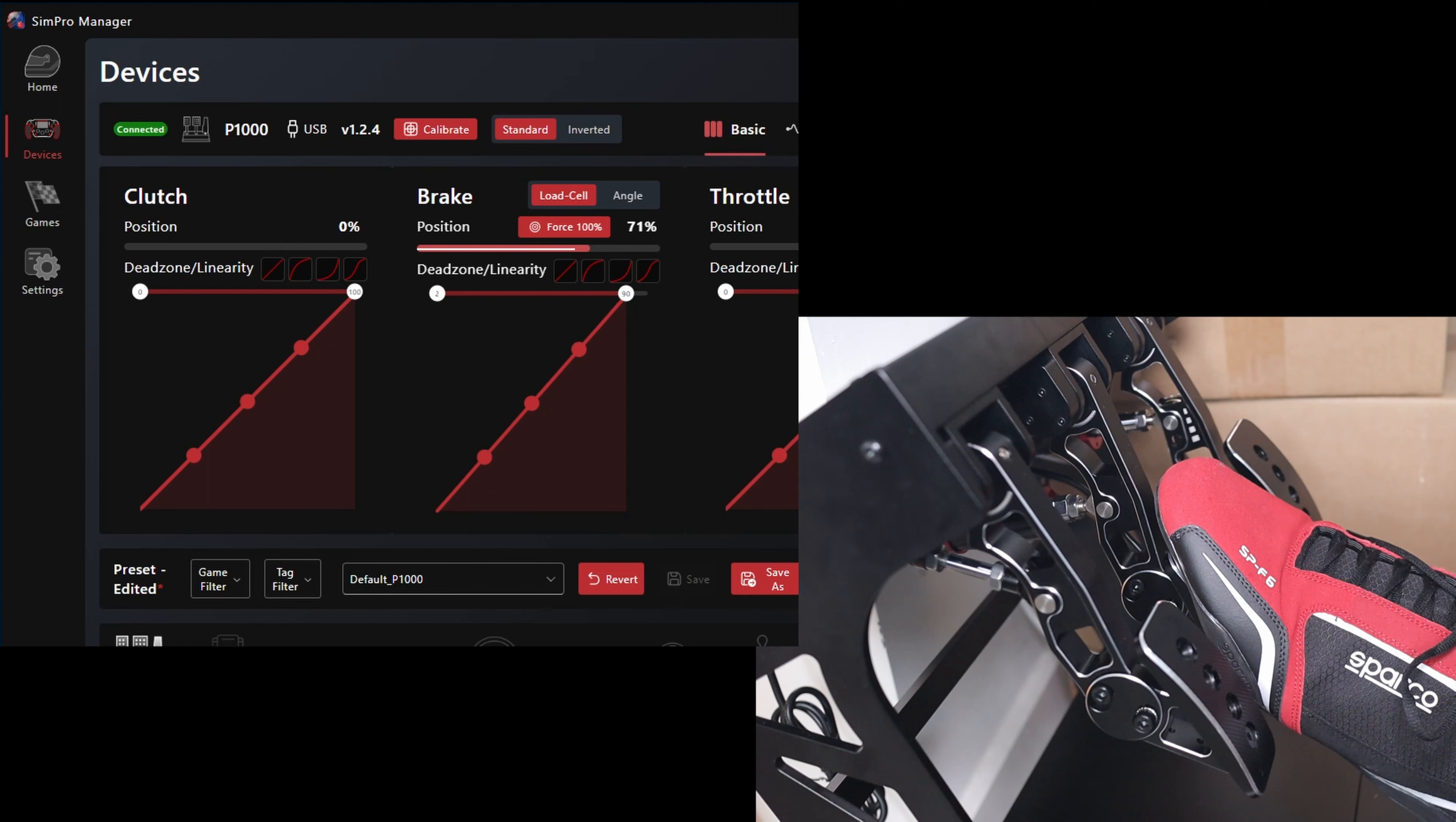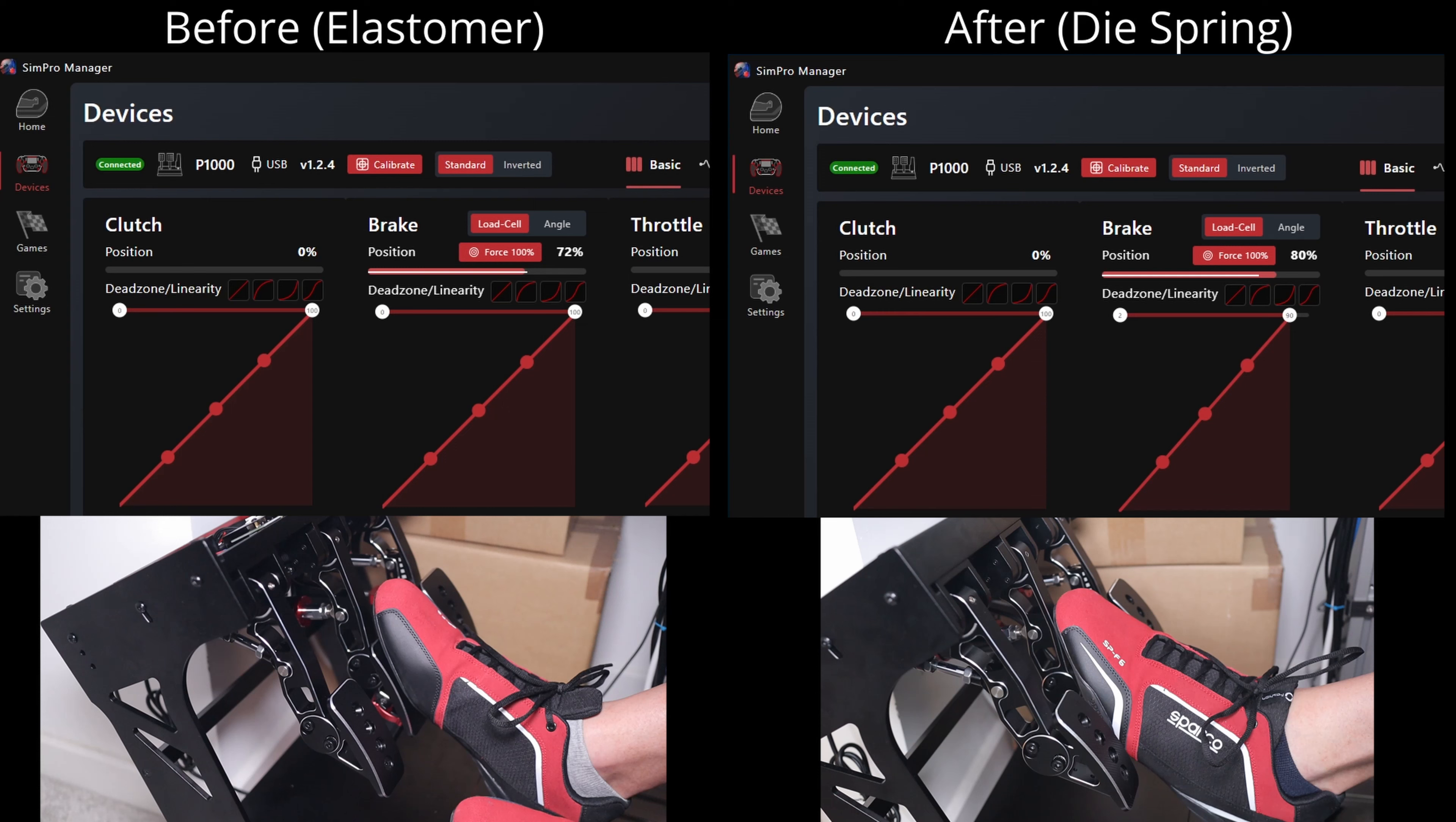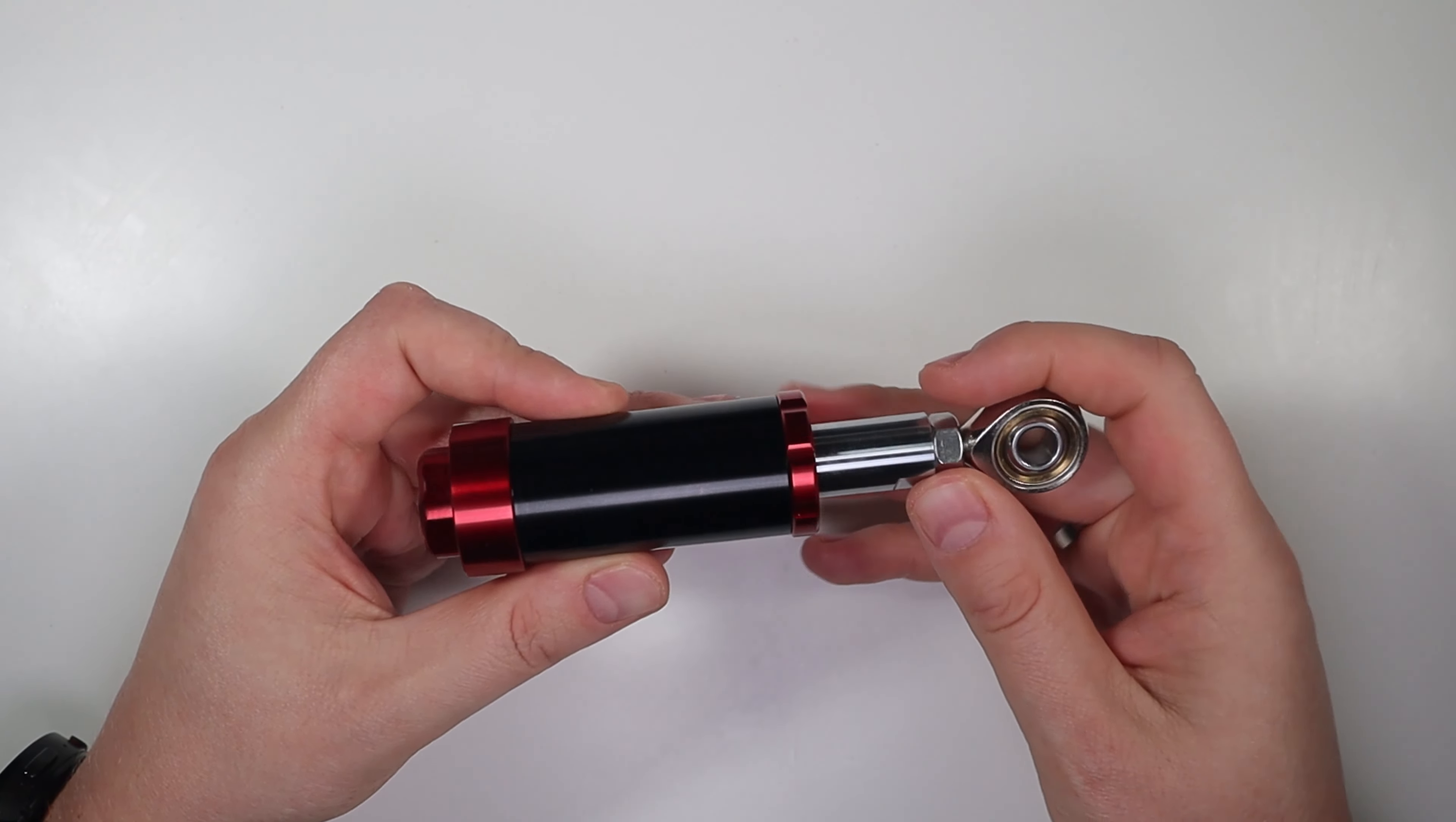Now let's see how the load cell works when I replaced elastomers with a die spring. As you can see, now the reading barely moves at all. And lastly, just a quick look at before and after side by side. Fortunately, the solution is very simple and quick to apply. So let me show you what I did with my brake.